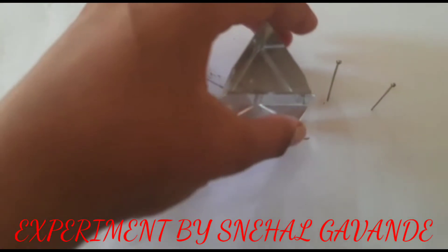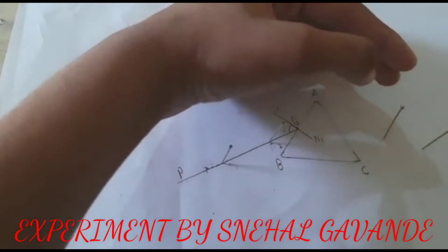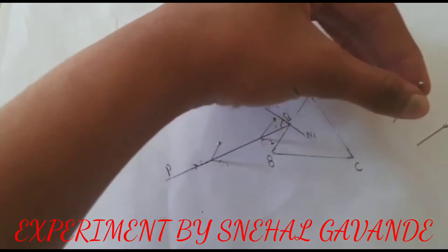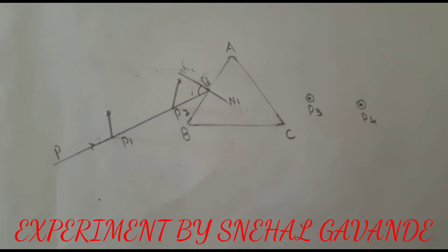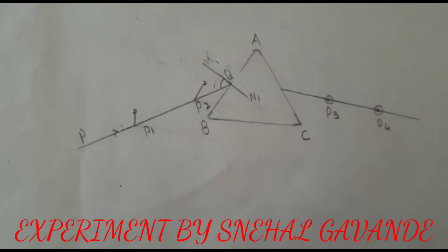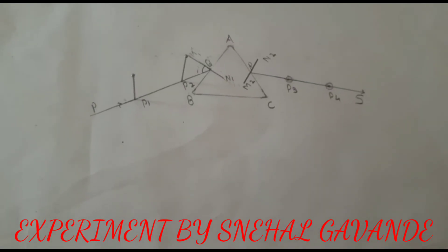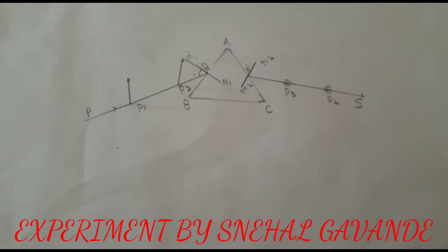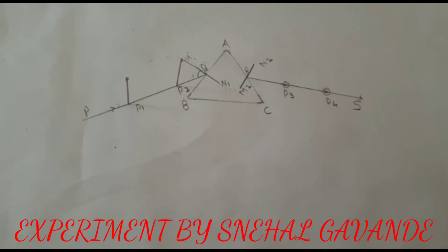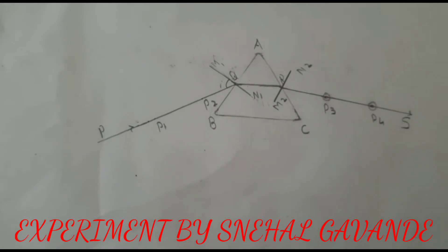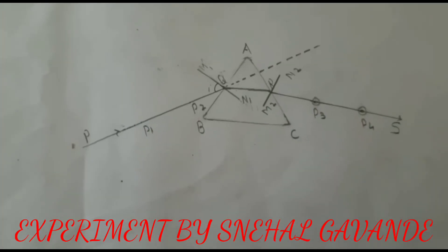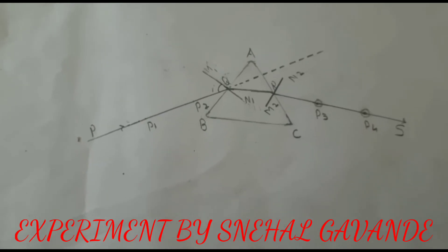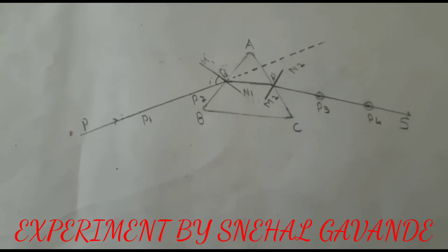Now I am going to remove the prism. Remove pins P3 and P4 and mark their positions by small circles. Then draw a line through points P3 and P4. Remove pins P1 and P2, then extend the line and join QR, and draw normals M2 and N2 at point R. Then extend PQ in the same direction and the emergent ray in the opposite direction to intersect each other at point T.